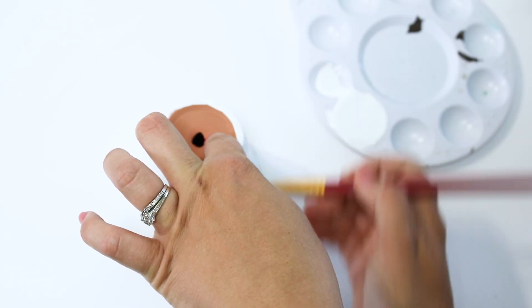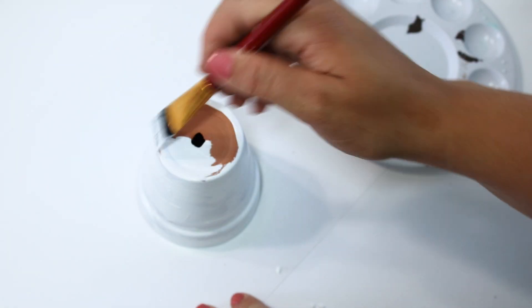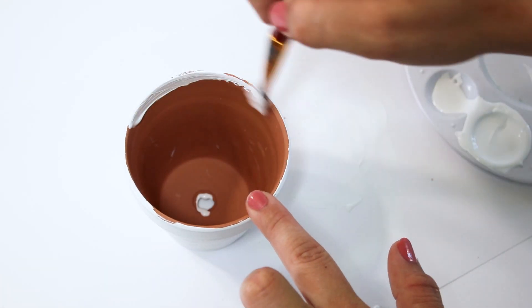To begin this project, I'm going to start by painting my pot white and then I'm going to distress it with some of my elephant color chalk paint.